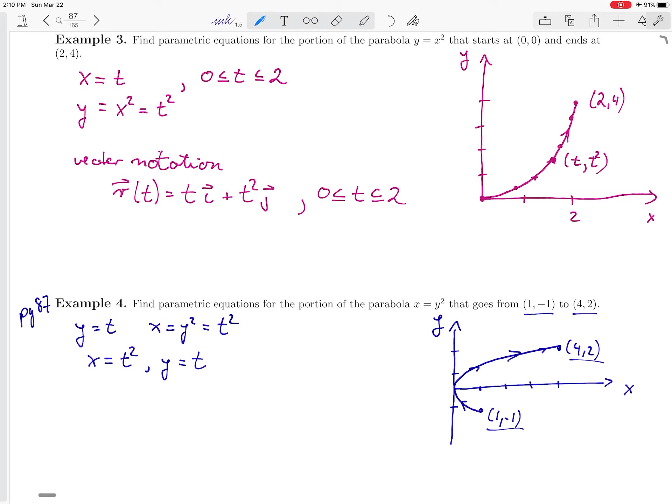And now the only question is, from where to where does t go? Well, let's see, t is equal to y and y starts at minus 1 and ends at 2. And so,